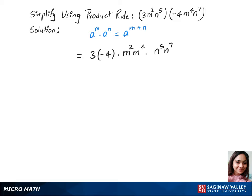This gives us 3 times minus 4 equals minus 12. We have the same base m, so we add up the powers: 2 plus 4. Same thing with n — write the base and add up the powers: 5 plus 7.